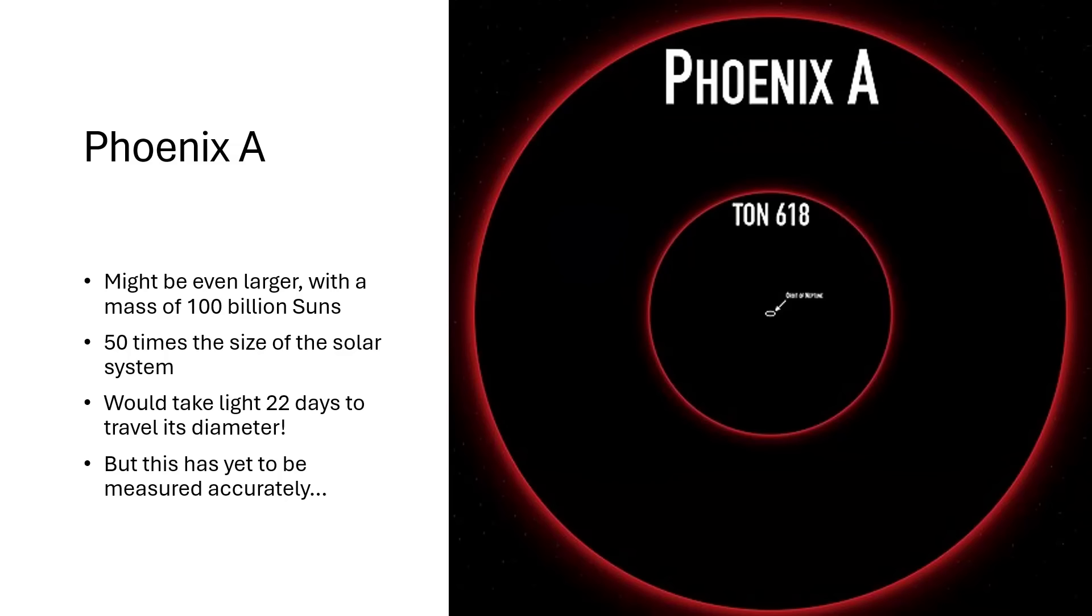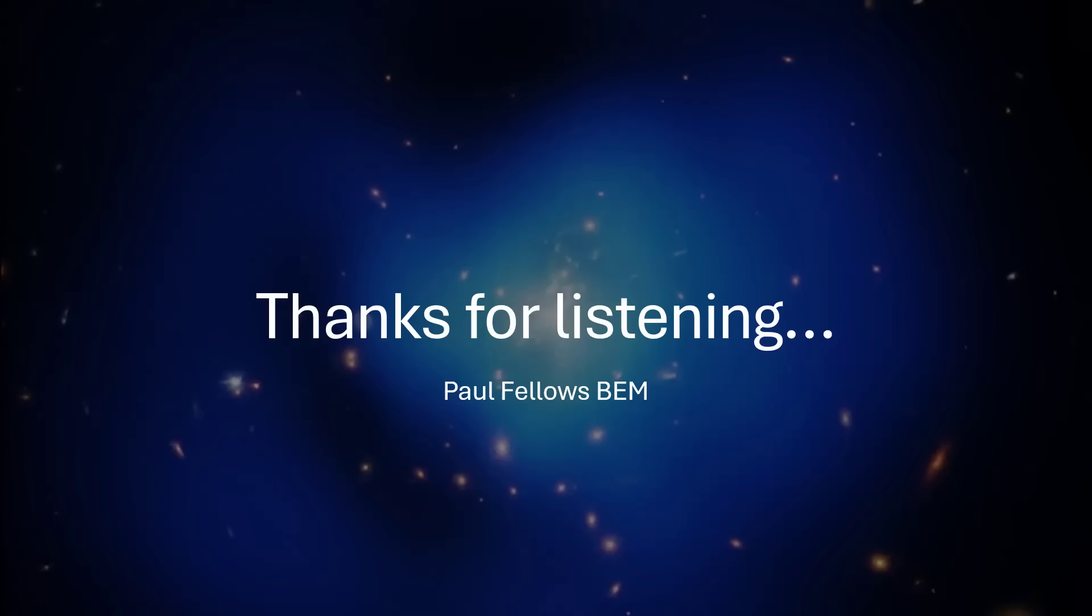We're not certain, we haven't measured this accurately. The best way to measure these things is to see some object in orbit around the mass and be able to track its movement and use Kepler's laws of planetary motion to help us work out the mass of the thing in the center. But it seems likely that Phoenix A is probably bigger and would therefore take the record away from TON 618. It's located in the Phoenix Cluster.